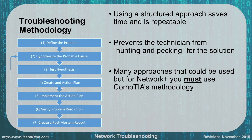A customer calls and says 'I can't get on the internet' — that would be a problem definition. Then we hypothesize or guess a probable cause. Is it a layer 1 issue — is the cable unplugged? A layer 2 issue — is the switch down? A layer 3 issue — do they not have a default gateway or DNS working? You go through the OSI model layers in your head. So maybe the cable is unplugged — that's your guess.